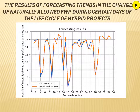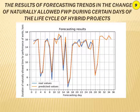On the basis of the received data, a histogram of change of fund for work performance duration was constructed, which underlies training of the neural network for certain days where the duration of the naturally permitted fund for work performance was observed. Studies based on neural network training show that when the number of epochs increases to more than 25,000, the prediction error does not exceed 4.8%. Based on the performed research, the adjusted artificial neural network establishes the tendencies of changes of the natural load fund for work performance during certain days of the life cycle of hybrid projects, with real and forecasted values for the conditions of the Volodymyr-Volensky area.